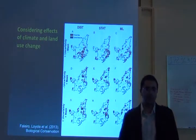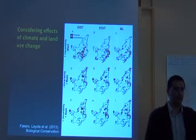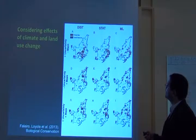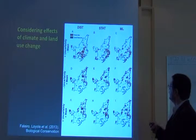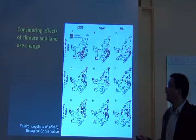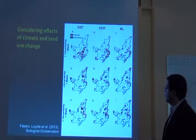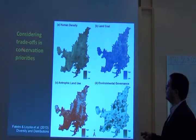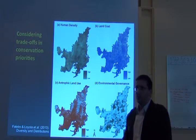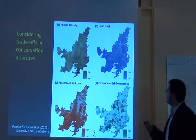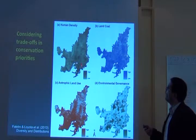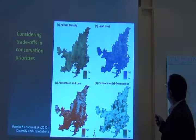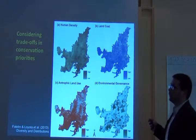Here's another example from the Cerrado where we balance conflicting interests. You can consider the effects of climate change, including future species distributions. To consider trade-offs in conservation priorities, you can include different features: the distribution of human population density in the Brazilian Cerrado, and land cost — in this case, a proxy using the gross income of the municipality as a surrogate for cost.